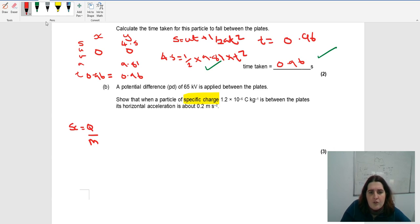It's asking for the horizontal acceleration. So you've got F equals MA. And because we're dealing with an electric field, I know that E equals F over Q, which equals V over D.